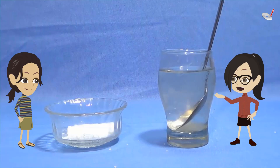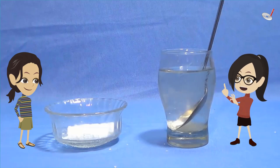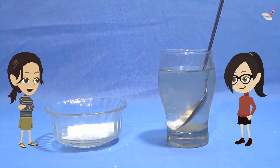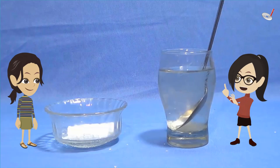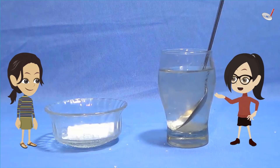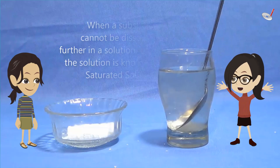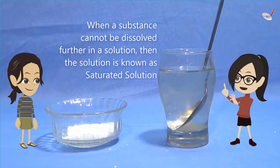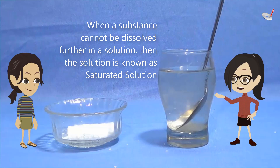Now tell me — what would you call this solution when sugar cannot be dissolved anymore in the water? When sugar dissolves in water, a solution is created. So what else would you call it other than a solution? It will be a solution when any substance dissolves in it, but when that substance cannot dissolve further, it is known as a saturated solution.